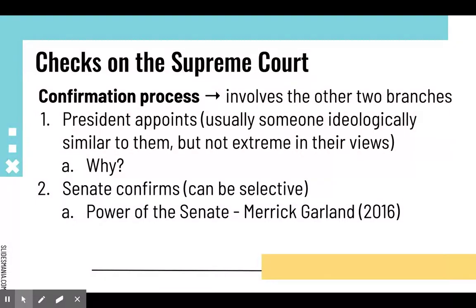Senate Majority Leader Mitch McConnell announced that the Senate would not hold a vote until voters elected a new president. He was going to postpone the vote, which he was constitutionally within his right to do. Obama nominated Judge Merrick Garland, and the Senate refused to hold a confirmation hearing. We actually had a 10-month vacancy on the court. The Supreme Court can operate with eight justices — it's not ideal, and 10 months is a long time — but it happened. Constitutionally, nothing mandates a timeline on the Senate's confirmation process.